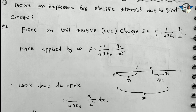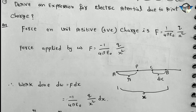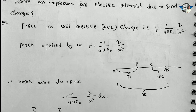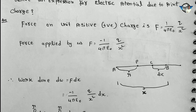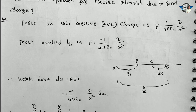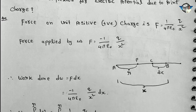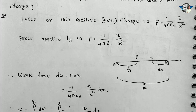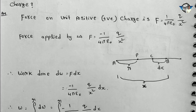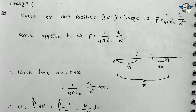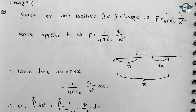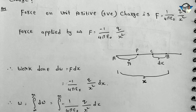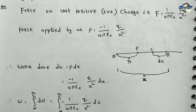Let me explain the derivation. First, I will check the electric charge force: F is equal to 1 by 4 pi epsilon naught, q by x squared. For the negative charge case, it becomes minus 1 by 4 pi epsilon naught, q by x squared.